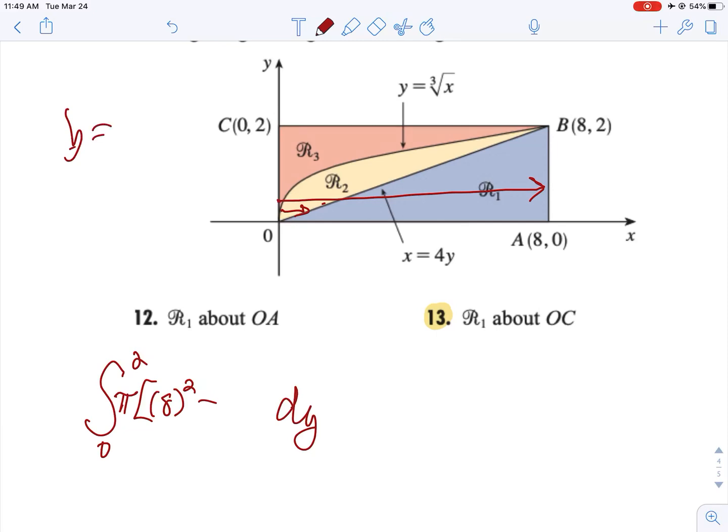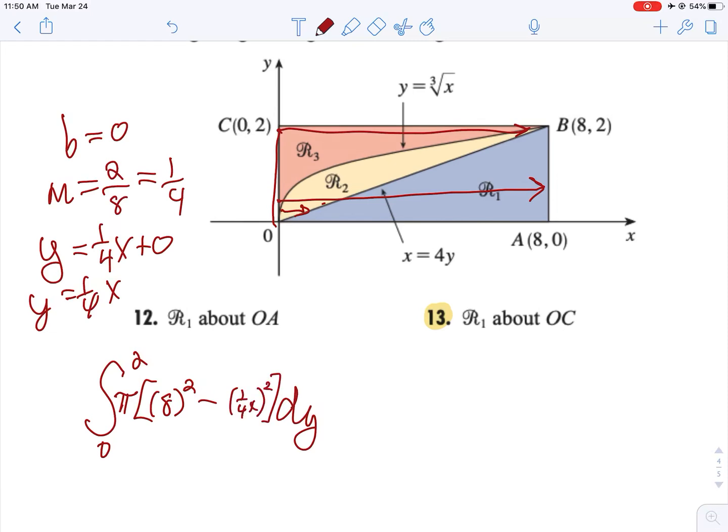So our starting value for this line, the b is 0. What's our slope? Well we're going to go up 2 and over 8. So our slope is 1/4. So our line equals y equals 1/4 x plus 0 or y equals 1/4 x. And so that's going to be 1/4 x squared.